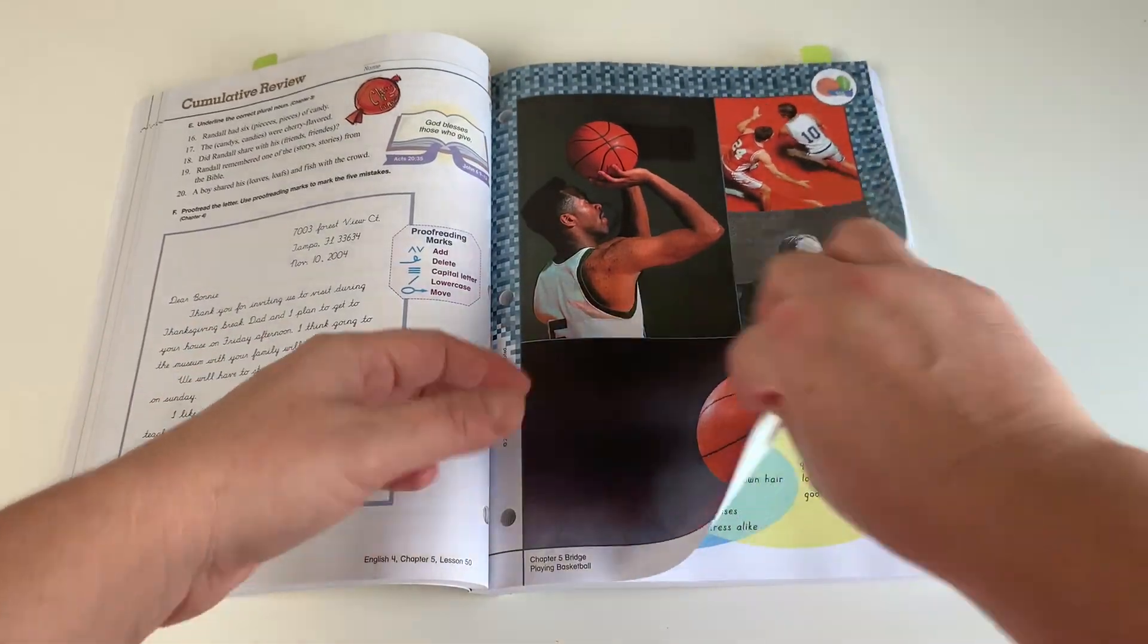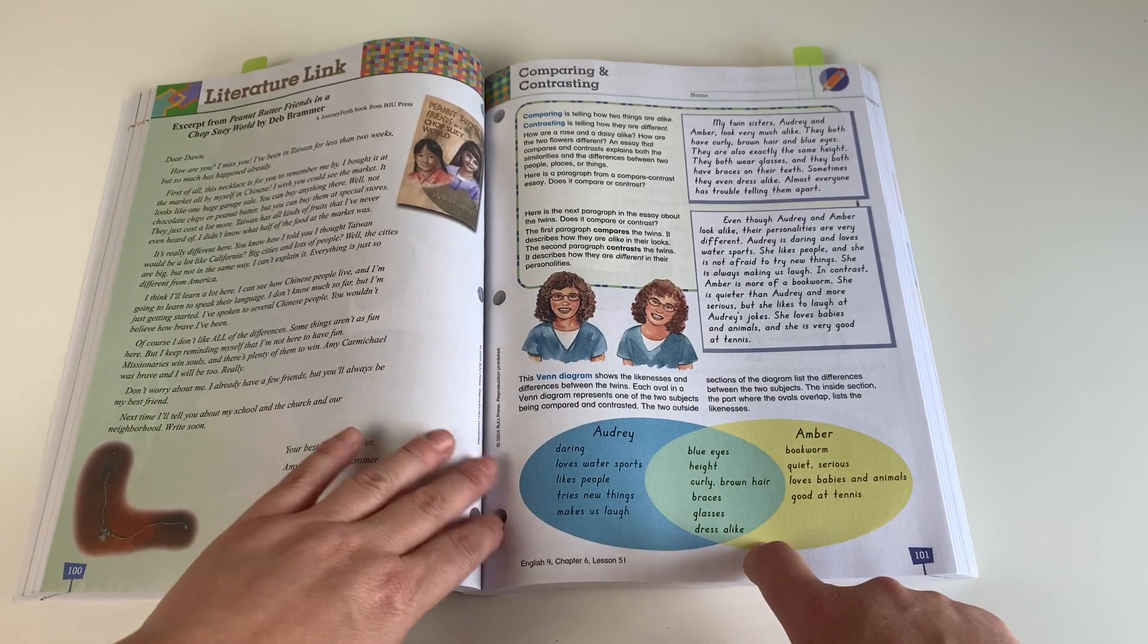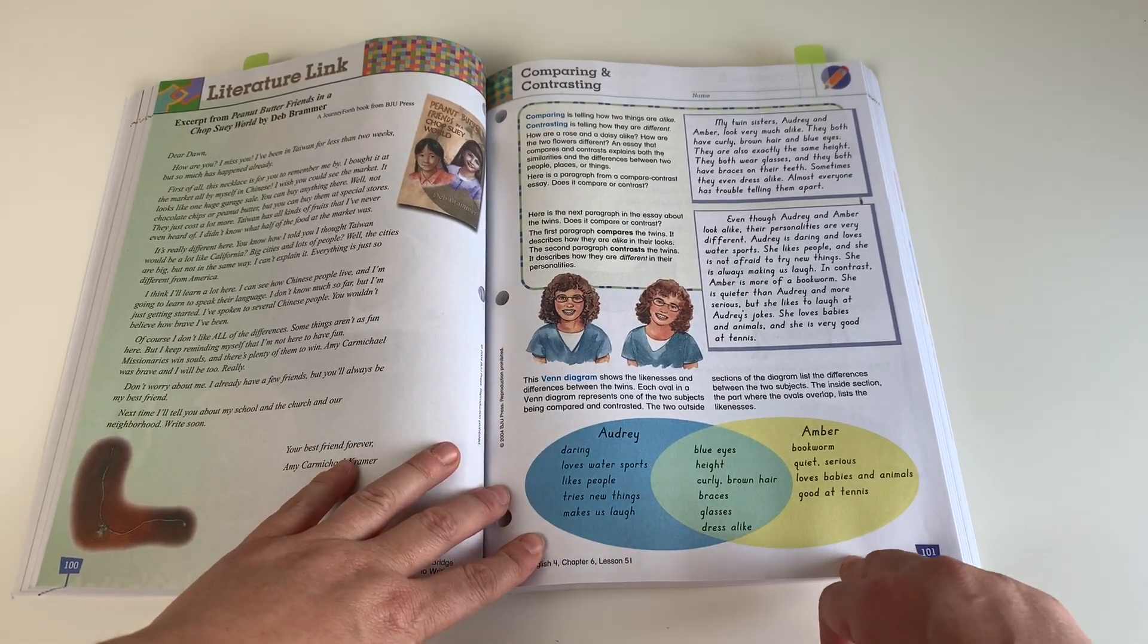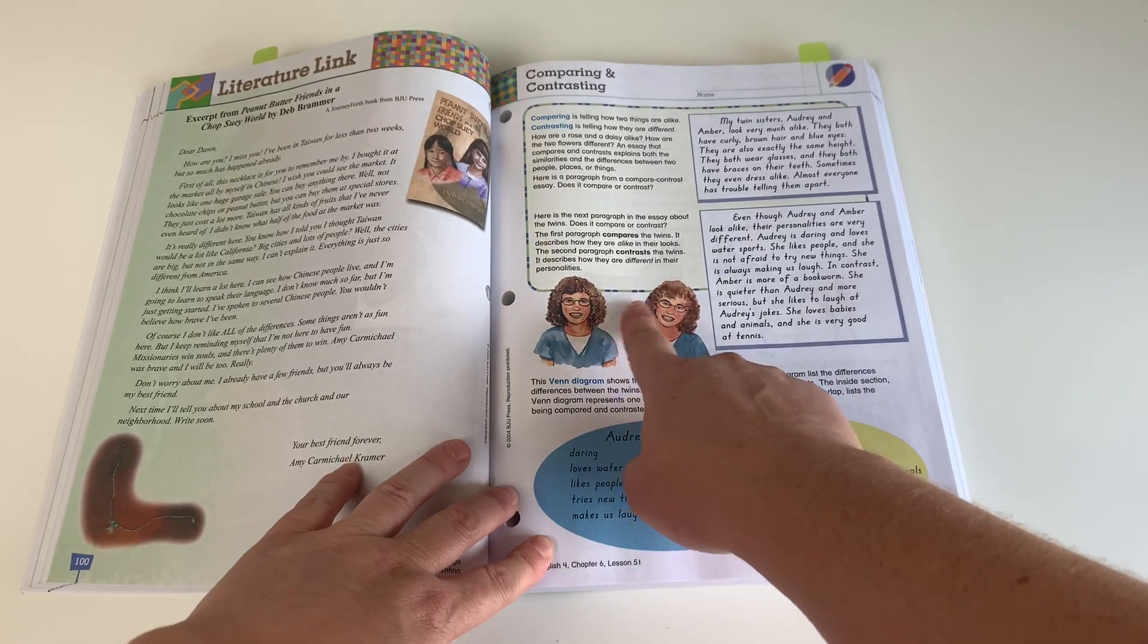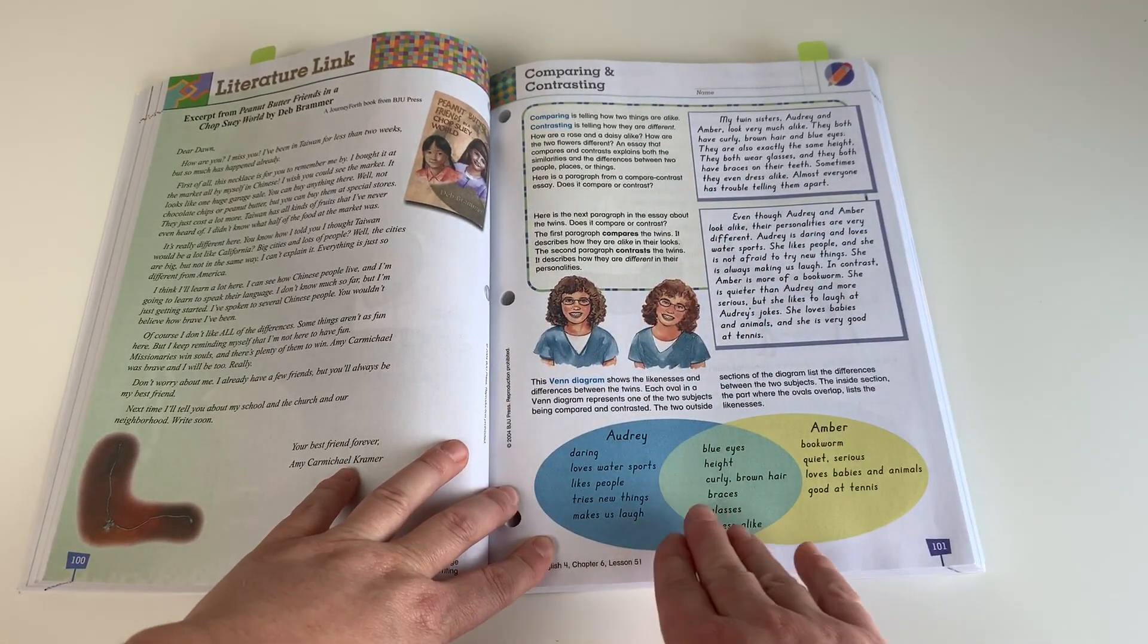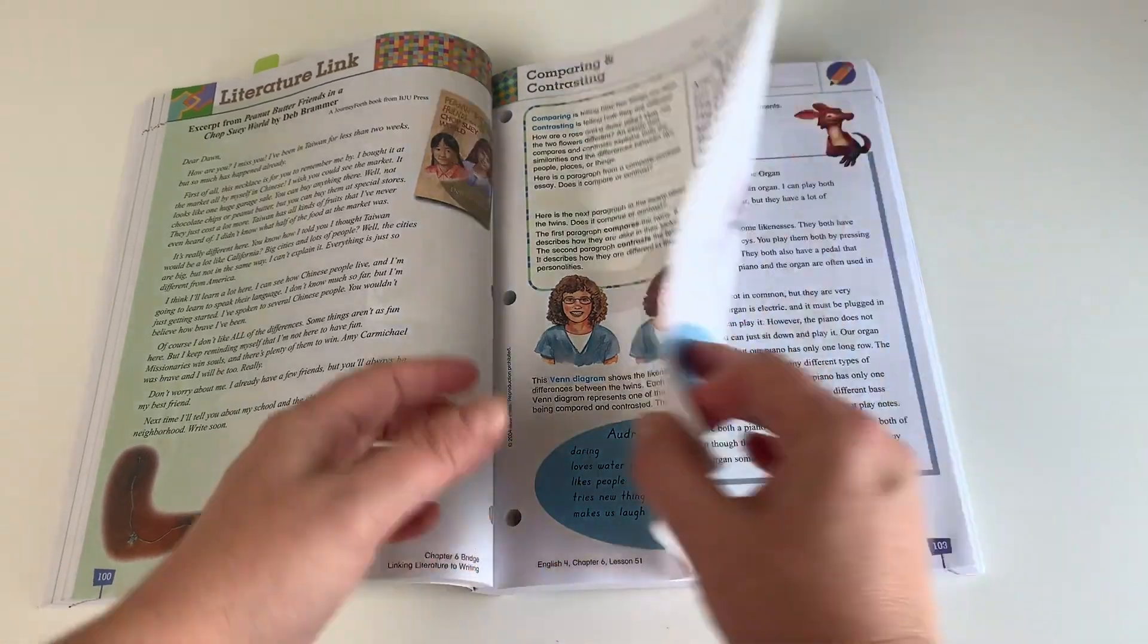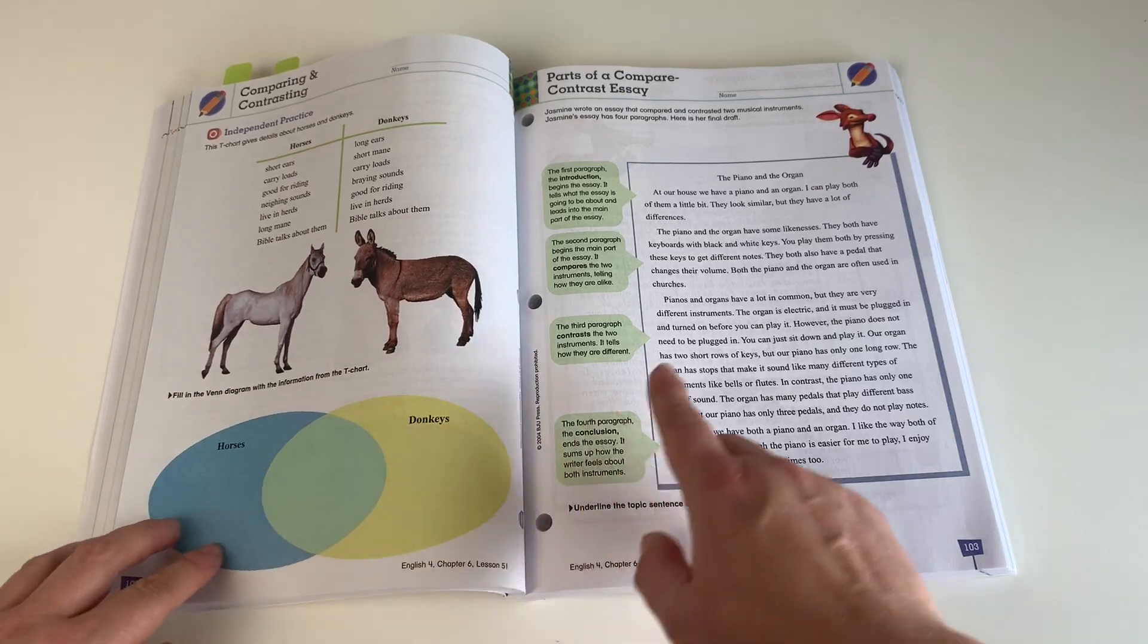So the very next chapter will be a writing chapter. This one's on compare and contrast essays and we really love the way that they teach writing in this program. It lays it out step by step of how to write every single type of writing. It just makes it so simple and it gives great examples, and so each day they'll do the next step in the writing process.